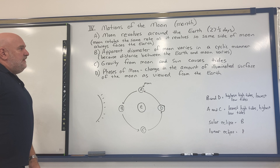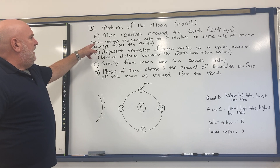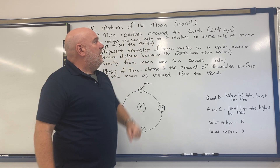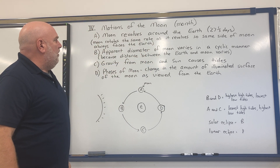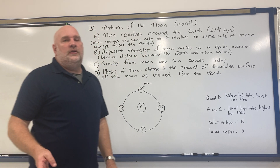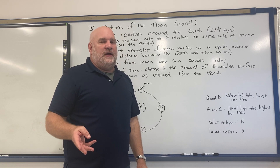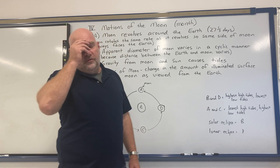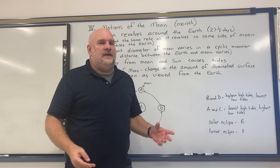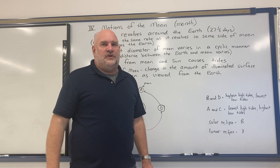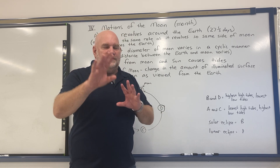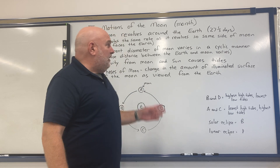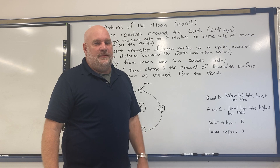An interesting thing is the moon rotates at the same rate as it revolves, so the same side of the moon always faces the Earth. Whenever you look at the moon, you always see the same craters — it doesn't matter if it's a full moon or a quarter moon, you're always seeing the same craters and other features on the moon. That's because it rotates and revolves at the same time.